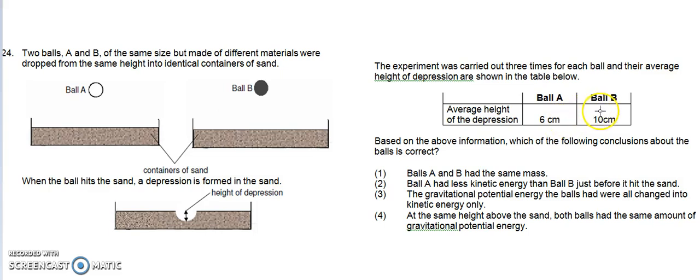Based on the above information, which of the following conclusions about the balls is correct? Option 1: Balls A and B had the same mass. This is not true because the balls are made of different materials and probably have different masses. Option 1 is out.